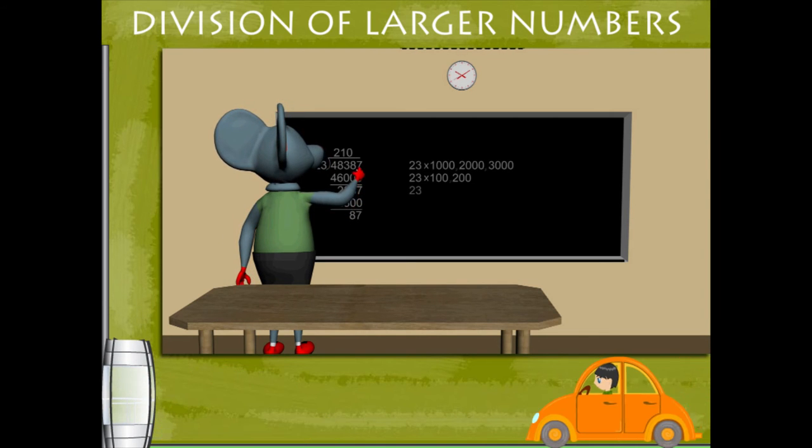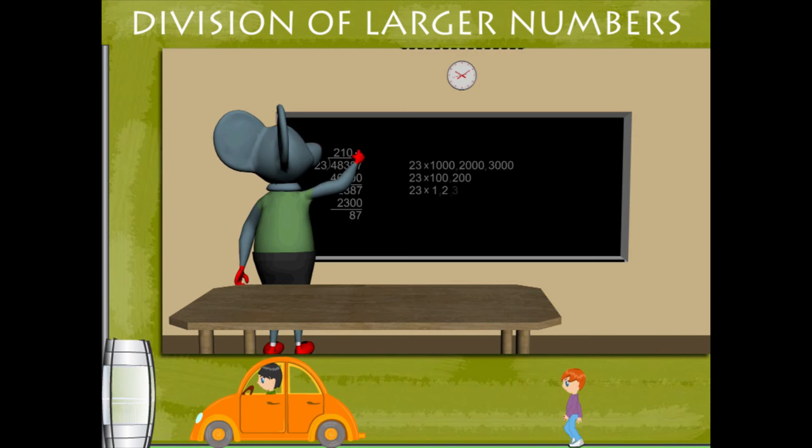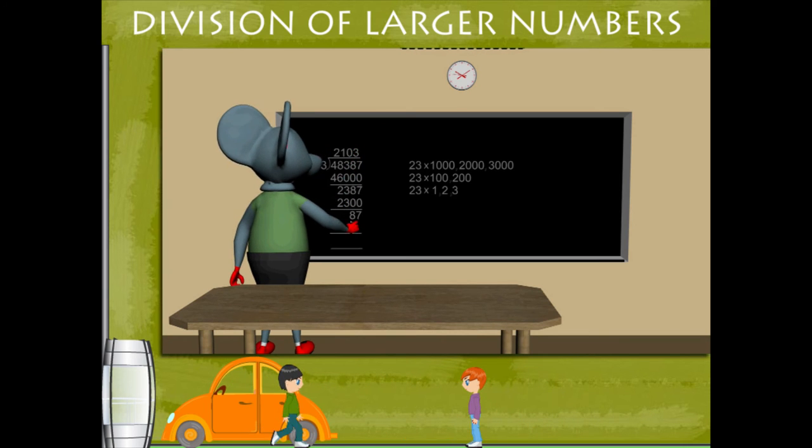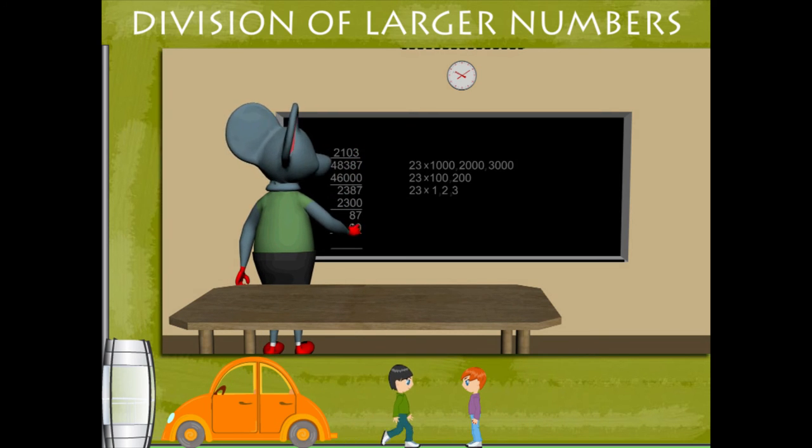He now multiplies 23 by 1 and 2 and 3. He writes 3 on the top and 69 below to get remainder 18.